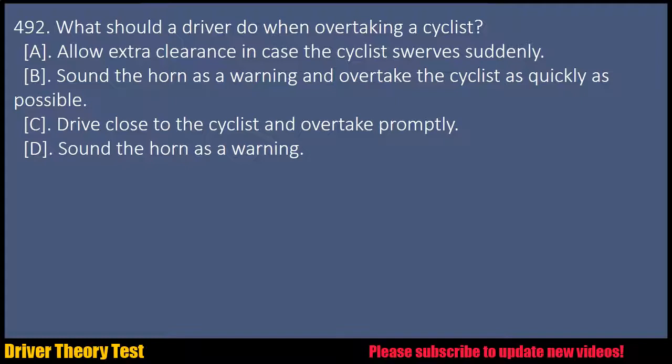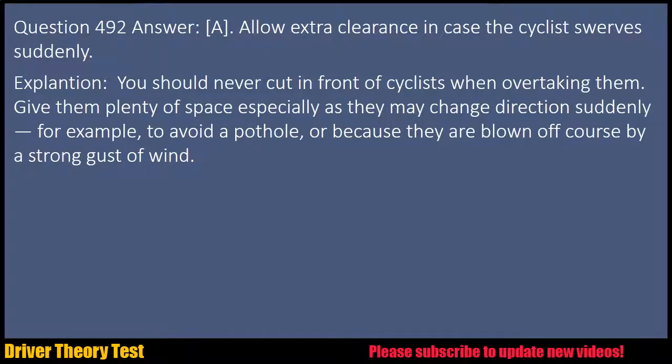Question 492: What should a driver do when overtaking a cyclist? A. Allow extra clearance in case the cyclist swerves suddenly. B. Sound the horn as a warning and overtake the cyclist as quickly as possible. C. Drive close to the cyclist and overtake promptly. D. Sound the horn as a warning. Answer: A. Allow extra clearance in case the cyclist swerves suddenly. Explanation: You should never cut in front of cyclists when overtaking them. Give them plenty of space, especially as they may change direction suddenly — for example, to avoid a pothole, or because they are blown off course by a strong gust of wind.